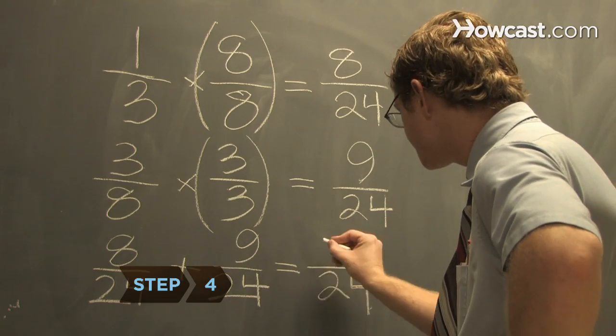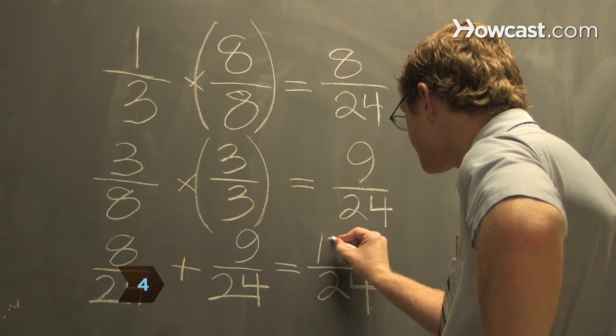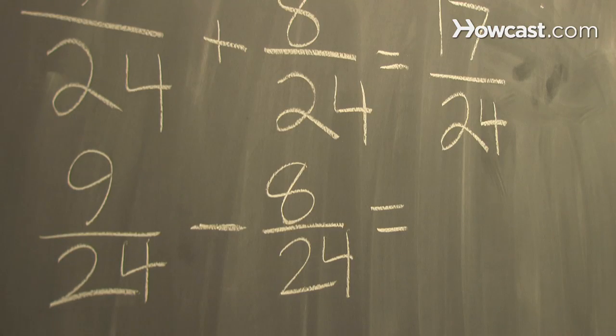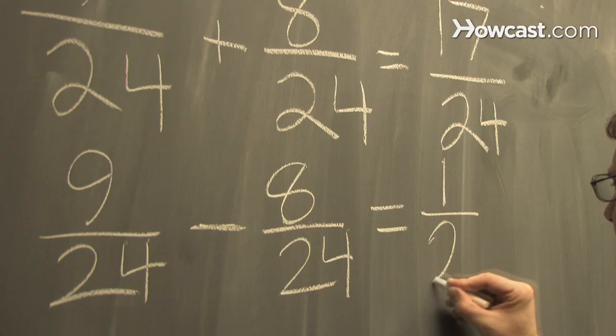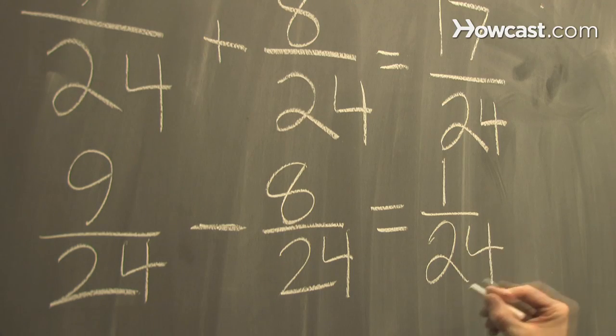Step 4. Add or subtract the numerators and write the sum over the common denominator. The sum of 9 24ths and 8 24ths is 17 24ths. The difference is 1 24th.